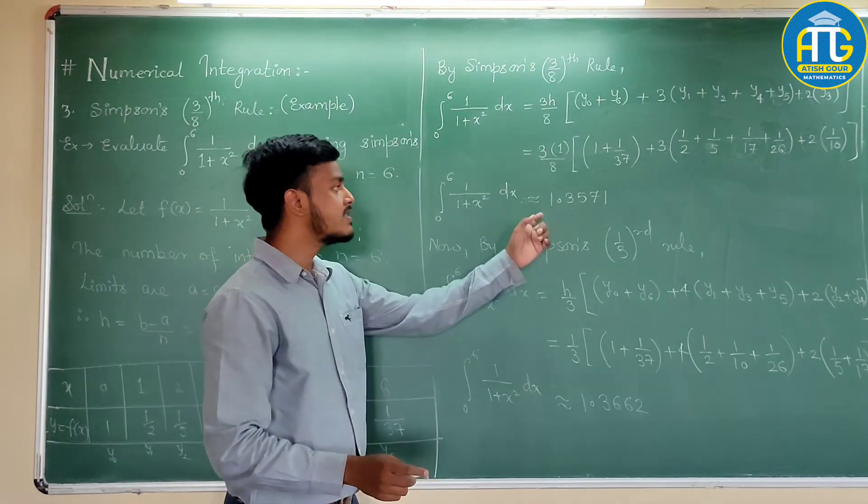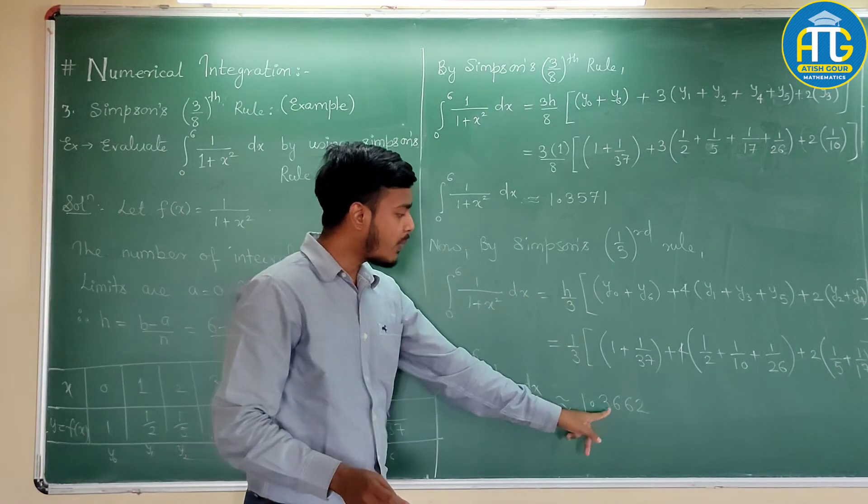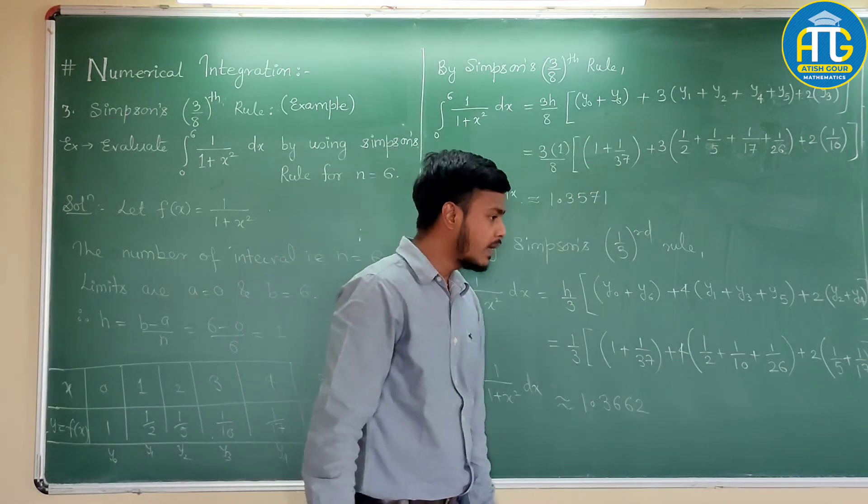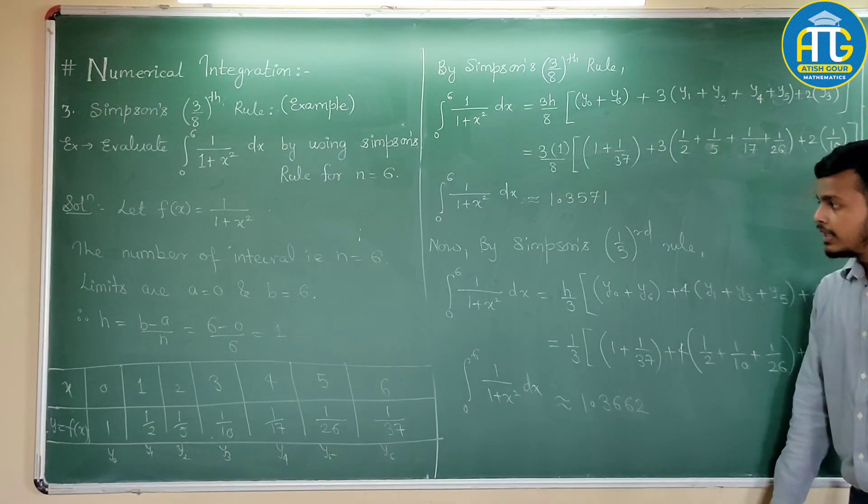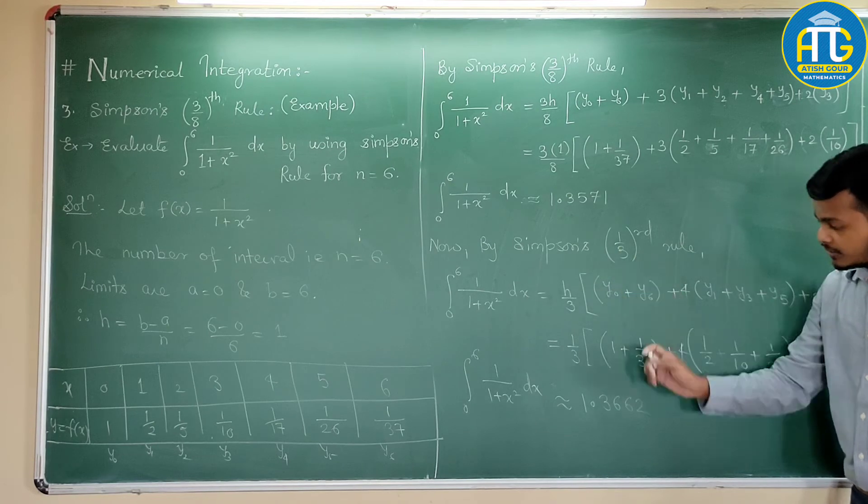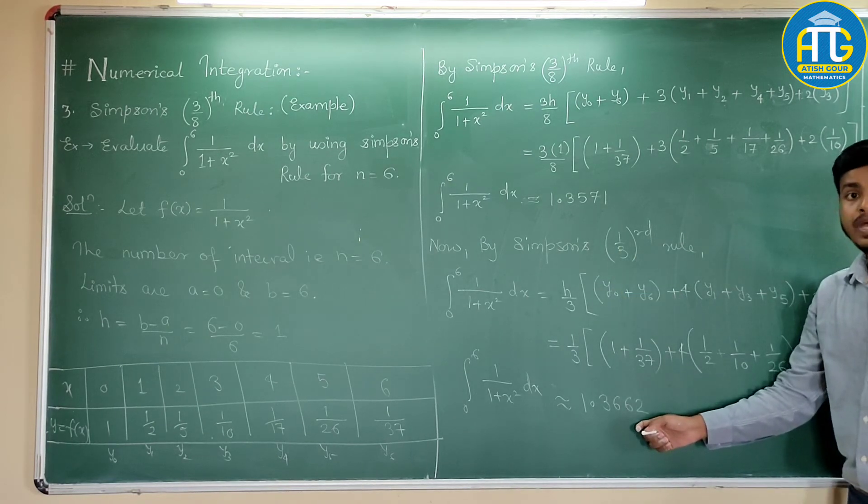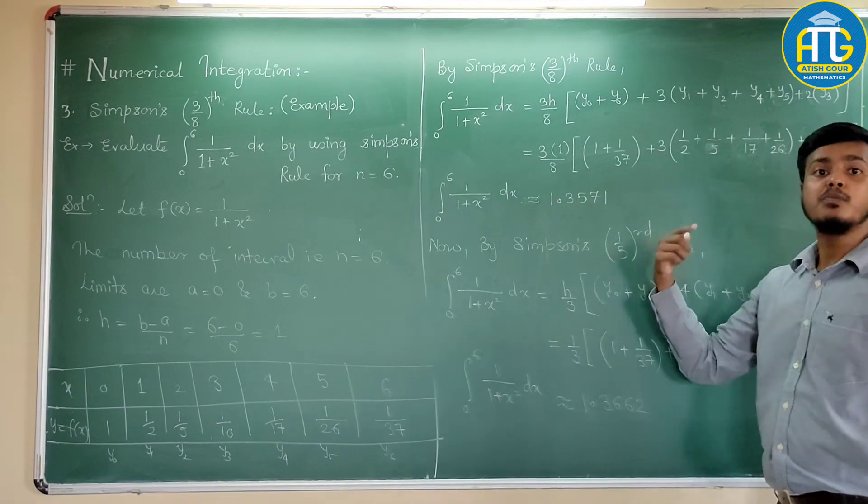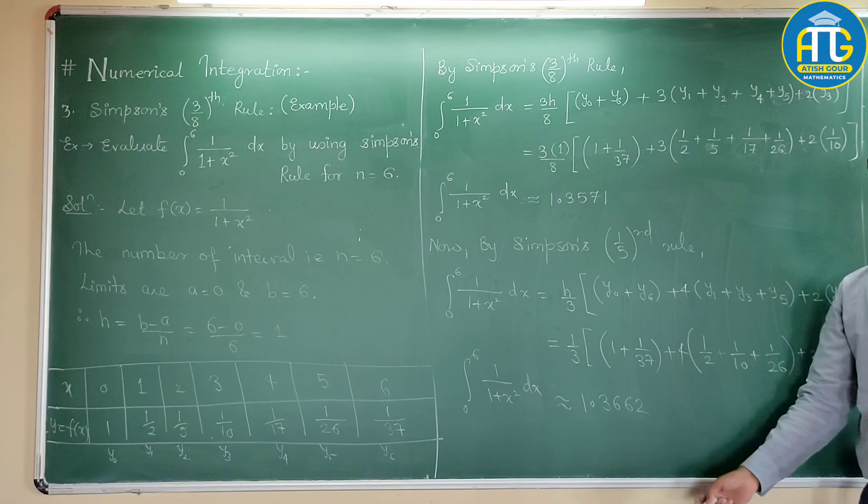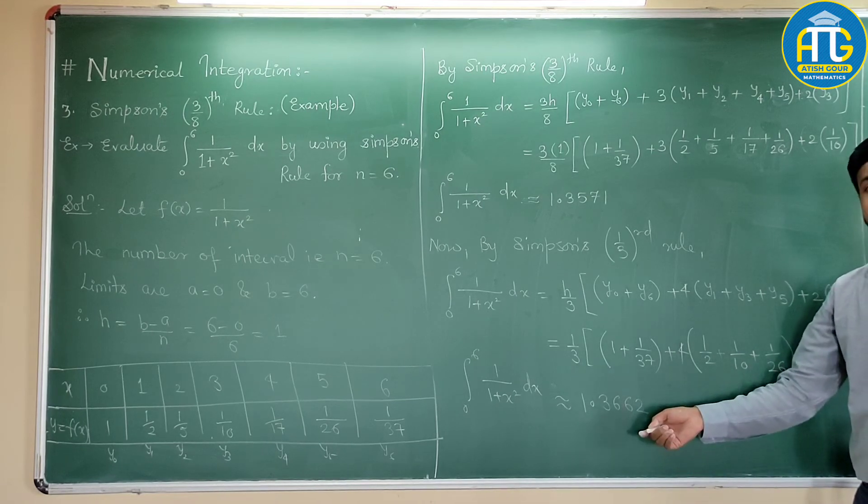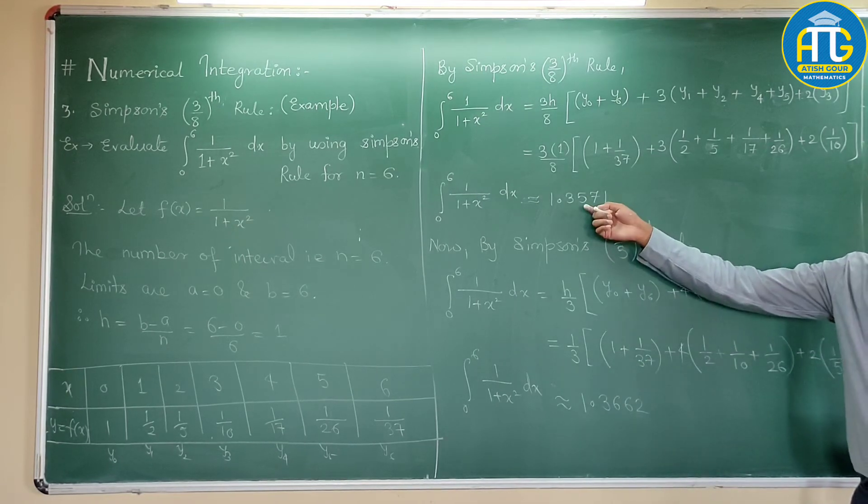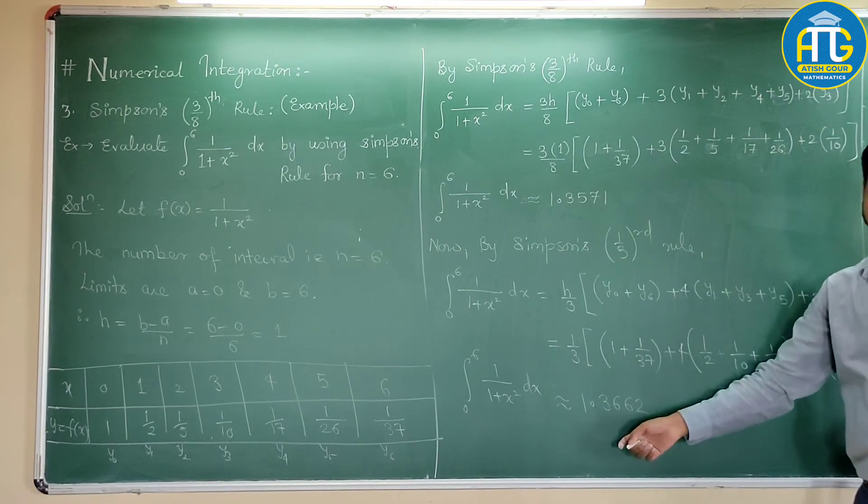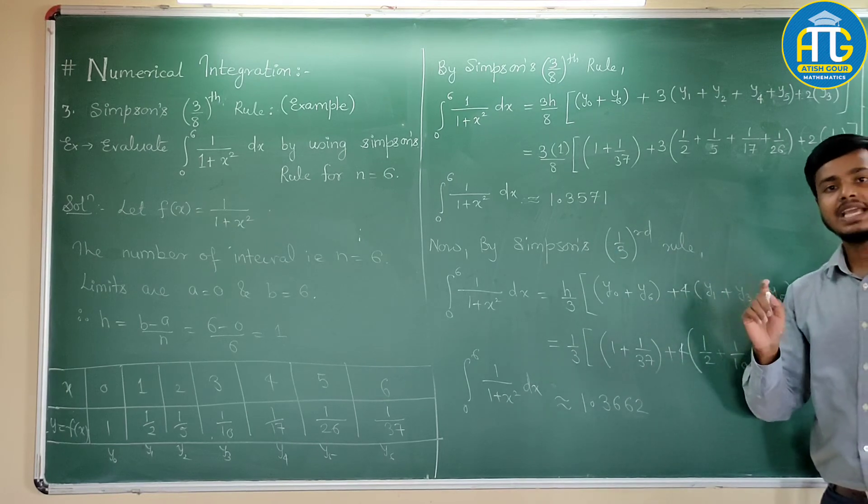Now, if you look at these two answers. This is 1.3662. This is 1.3571. So, here as you can see, with the help of Simpson's one-third rule, we have a better value than this. So, this value is because of more errors. Here, in one-third rule, the number of errors are less. Here, the number of error is more. That's why there is a difference in the values. And these differences in the values are due to the errors.